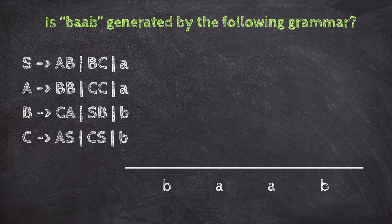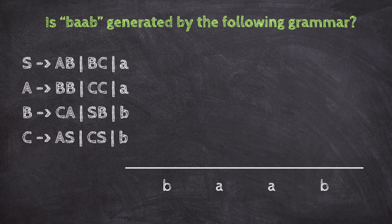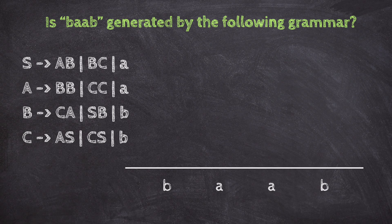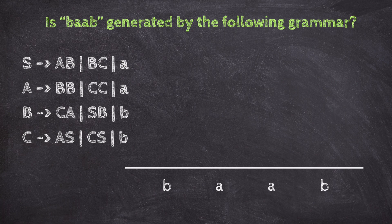Let's solve this question. Is BAAB generated by the following grammar? S goes to AB, BC, or A. A goes to BB, CC, or AA. B goes to CA, SB, or B. C goes to AS, CS, or B.